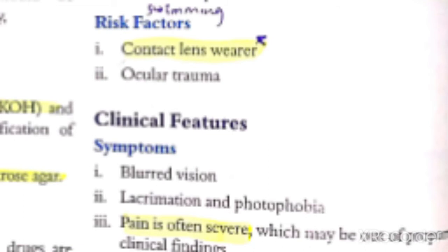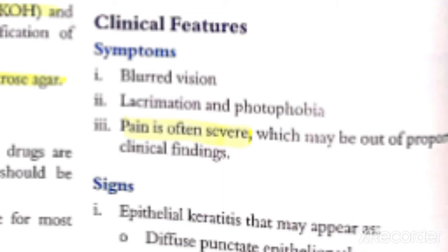What are the clinical features? The symptoms of the patient — keratitis symptoms are the same as we have seen before: pain, photophobia, blurring of vision, lacrimation, and redness. But the typical thing to remember here is, first: contact lens history. Second: the patient has a lot of pain — severe pain, out of proportion pain. It overwhelms the patient.